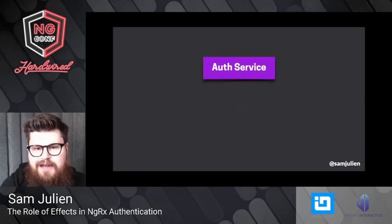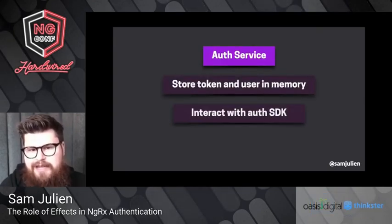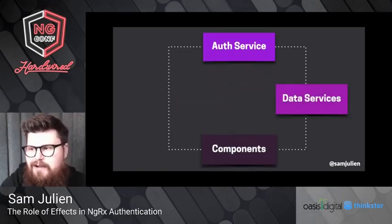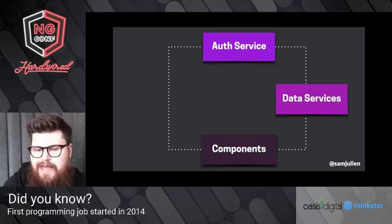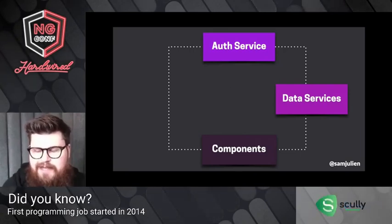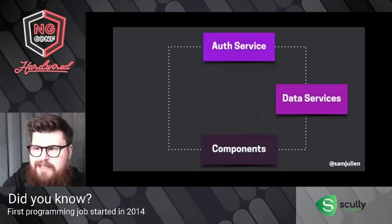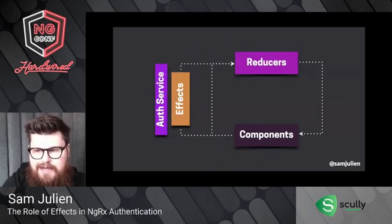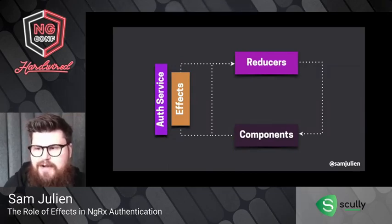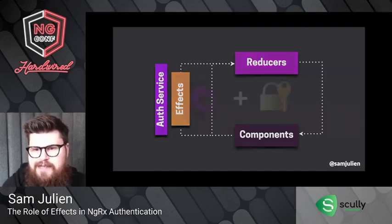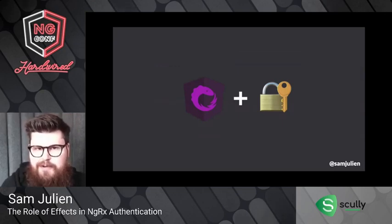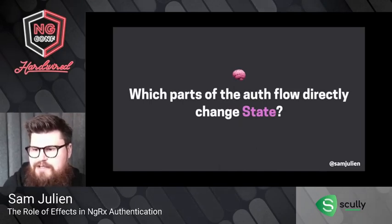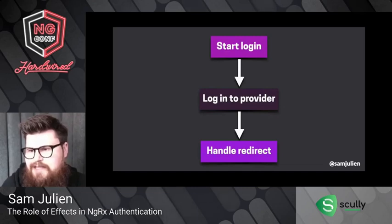In vanilla Angular, we typically throw everything into an auth service. That auth service stores the token and user in memory, interacts with the auth SDK, and handles all of the redirect logic. It also interacts directly with components and data services — usually we need to add the token to outgoing requests to hit a protected API. But in NgRx instead of having an auth service with data services and components interacting together, we have a distributed architecture where the auth service becomes a thin layer around our SDK alongside our effects, and the rest of those responsibilities get spread out between effects, selectors, and reducers.